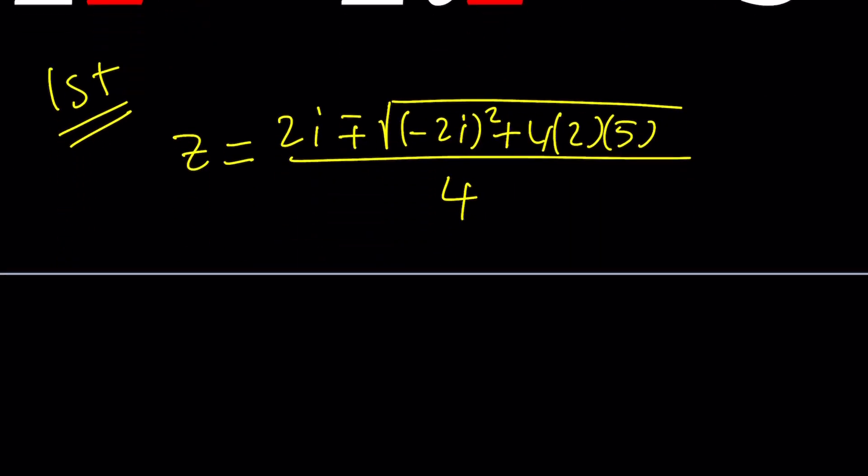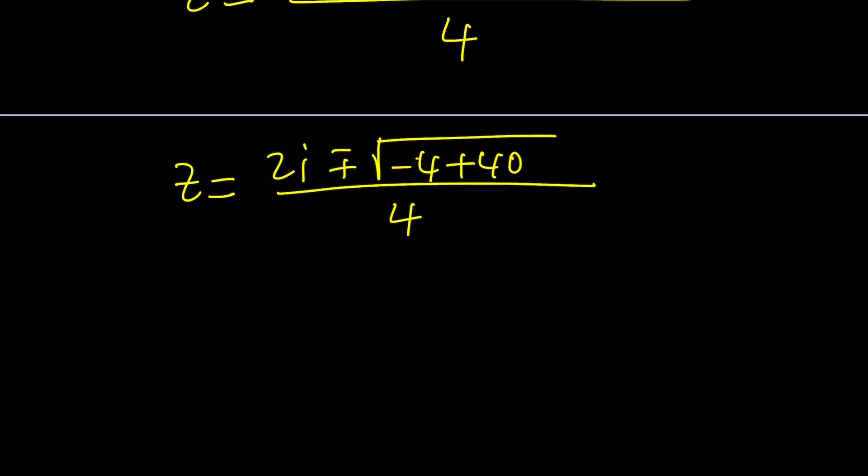When you square negative 2i, you get 4i squared, which is the same thing as negative 4. So let's go ahead and write it as negative 4. This gives us 4 times 2 times 5, which is 40. So we get negative 4 plus 40 under the radical, and all of that is divided by 4. Now 40 minus 4 is equal to 36, and the square root of 36 is positive 6. So we get 2i plus minus 6 divided by 4 from here.